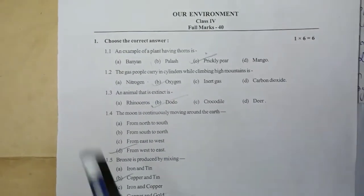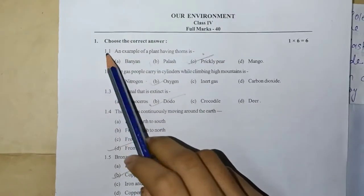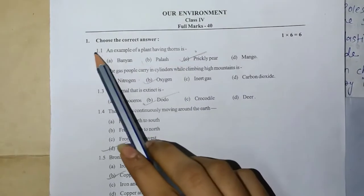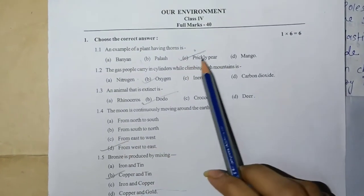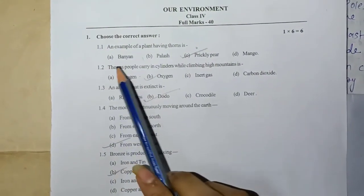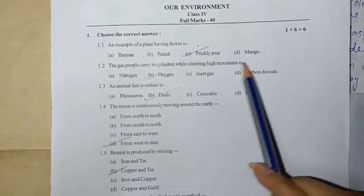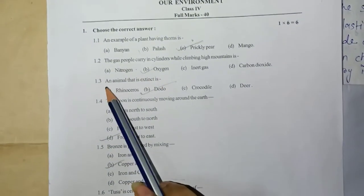Choose the correct answer. 1.1: An example of a plant having thorns is - answer: prickly pear. 1.2: The gas people carry in cylinders while climbing high mountains is - answer: oxygen.